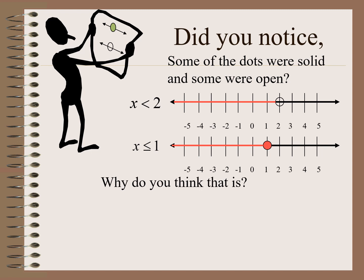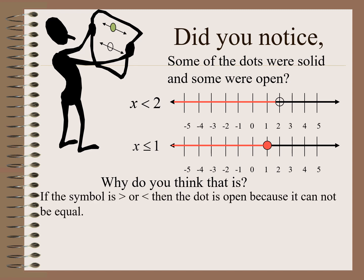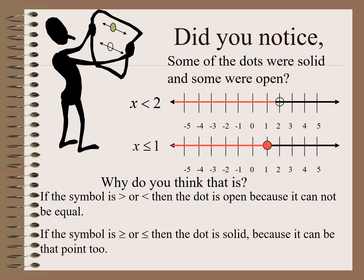Did you notice some of the dots were solid and some were open? Like in x is less than 2, we use an open dot, and in x is less than or equal to 1, we use a closed dot. If the symbol is greater than or less than, the dot is open because it cannot be equal. If the symbol is greater than or equal to, or less than or equal to, then the dot is solid because the number is included in the solution.